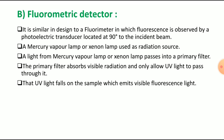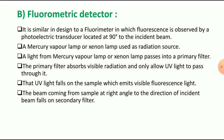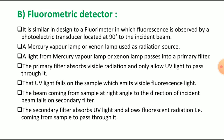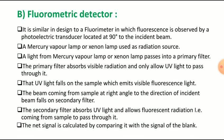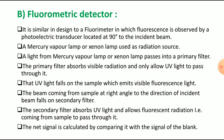The UV light then falls on the sample. The sample absorbs that UV light and emits visible fluorescence. That fluorescence light coming from the sample at a right angle to the direction of the incident beam passes through a secondary filter. The secondary filter absorbs the UV light and allows only the fluorescent radiation coming from the sample to pass through it. The net signal is then calculated by comparing it with the blank reading.